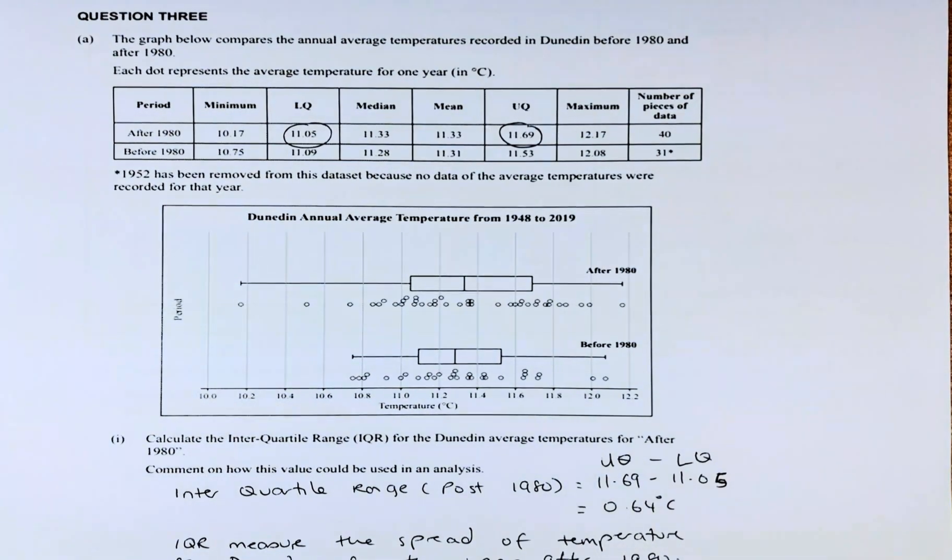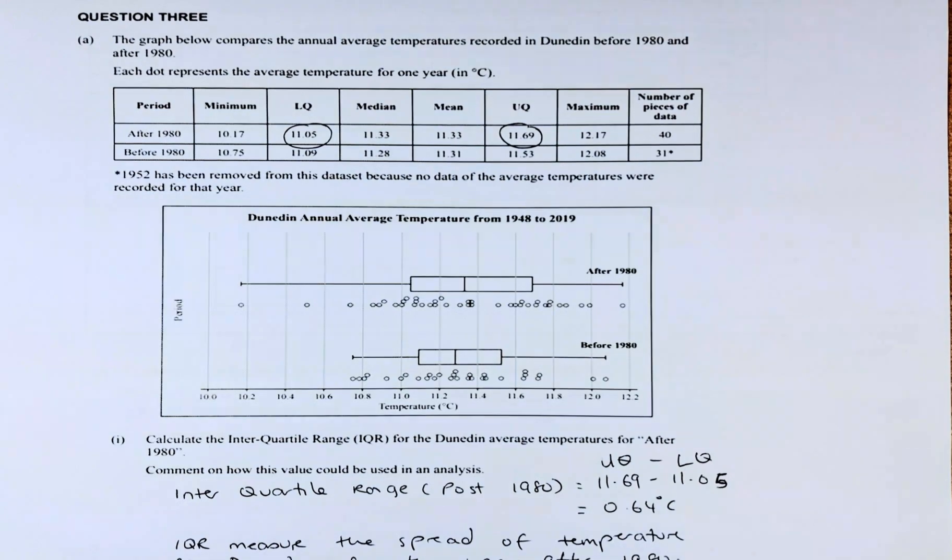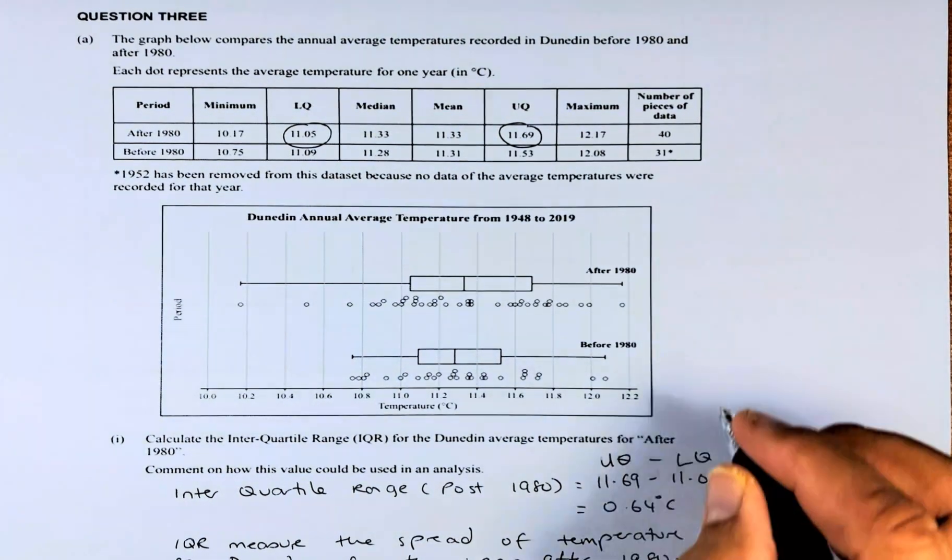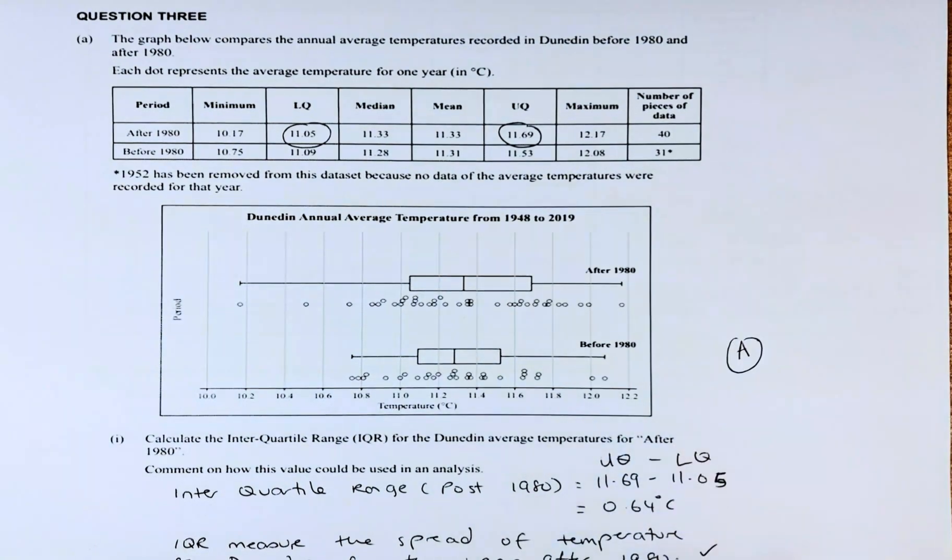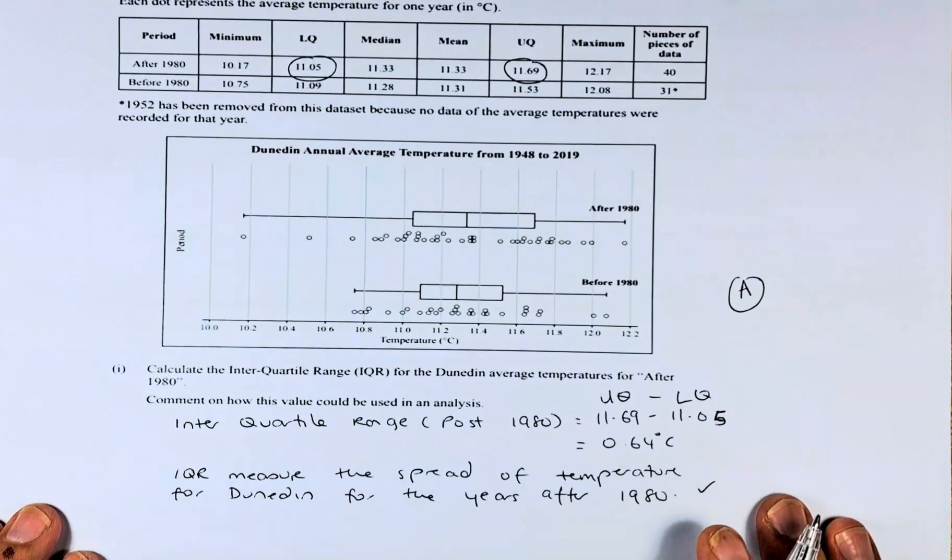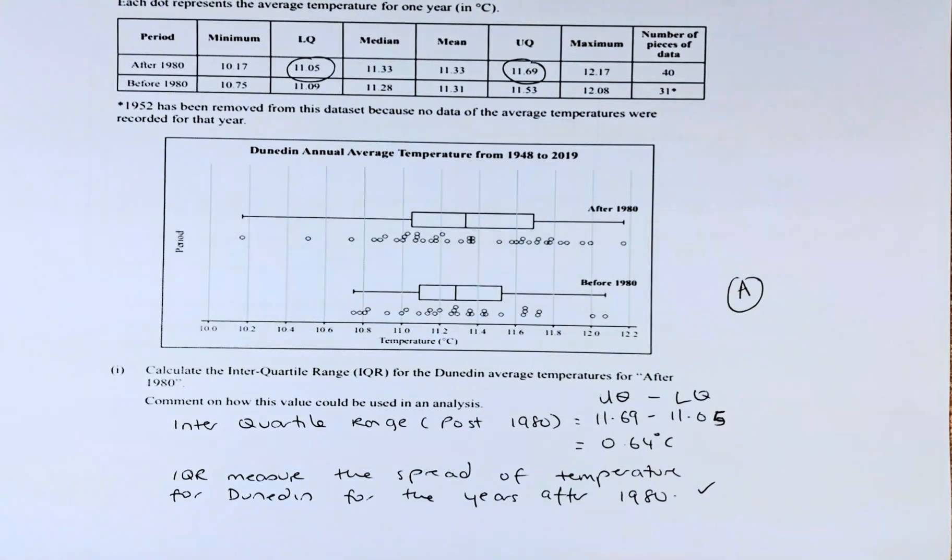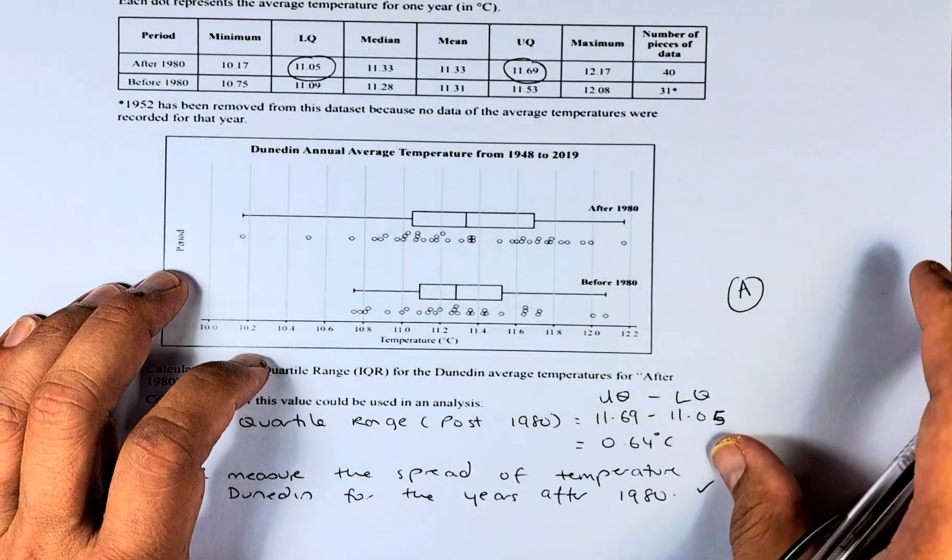What does IQR measure? IQR actually measures the spread - how wide is the distribution between a sample set of data. So the answer is that IQR measures the spread of temperature for Dunedin for the years after 1980. You can answer that and you get an achieve for that question. We will look at question part 2 of question 3A.